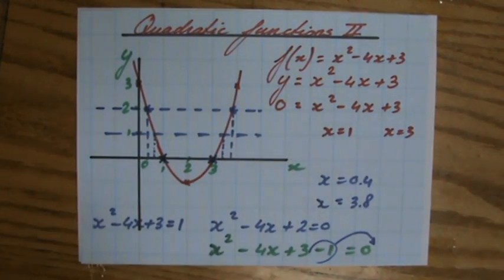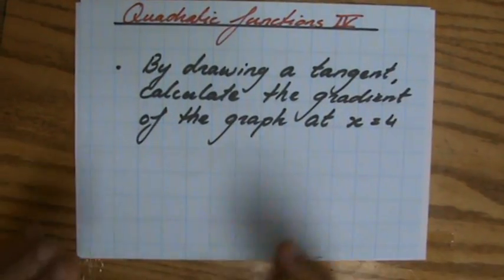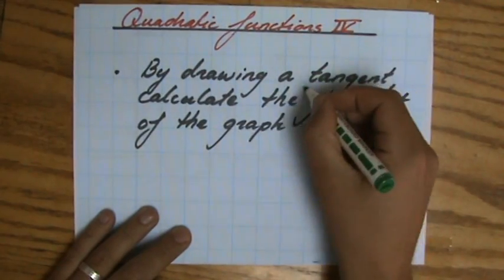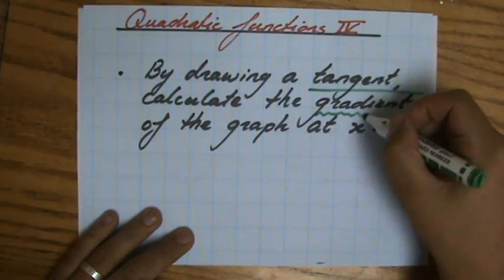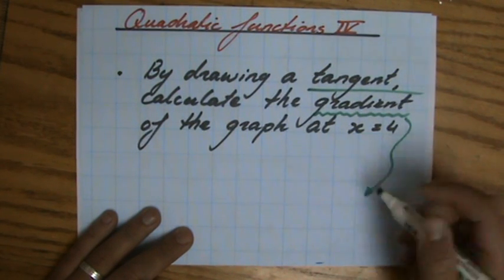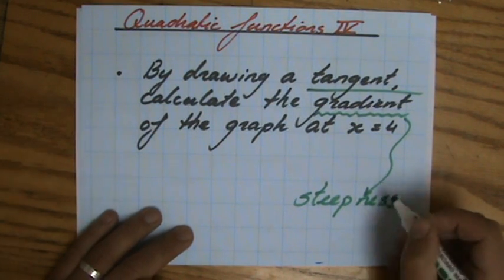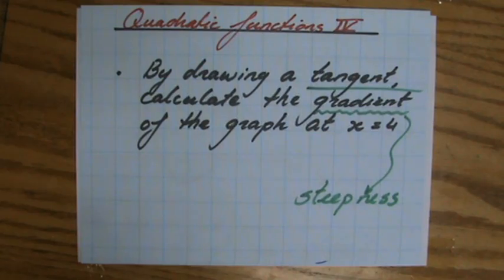Now the last part, we're going to answer the following question. It says by drawing a tangent, and I'll explain in a minute what a tangent is, we have to calculate the gradient, and I hope you're familiar with the word gradient, because that says something about the steepness of a line, or rise over run, some of you will say, of the graph at x equals 4.